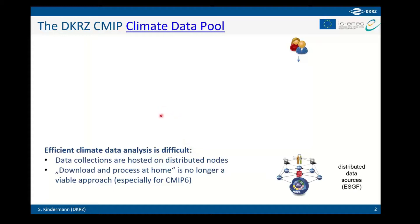As a user, you normally have big problems analyzing the large distributed data accessible via ESGF. It is hosted on separate nodes in different countries, they are up and down, and there are different tools and transport protocols to access the data. The download-and-process-at-home approach is no longer a viable research approach, especially for CMIP6.